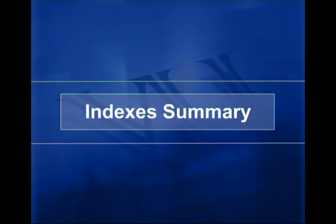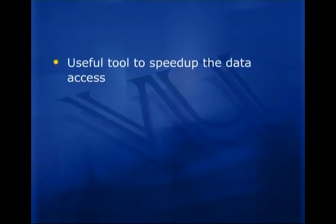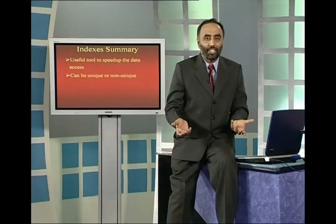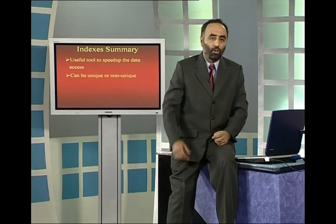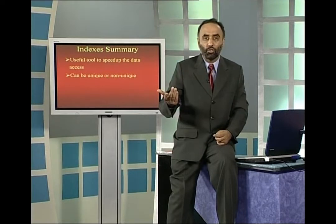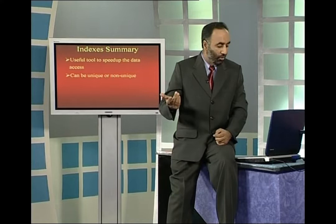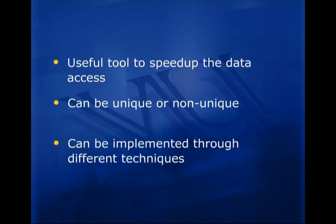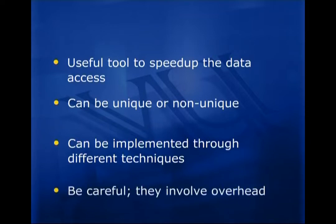To summarize the discussion on indexes: they are a useful tool to speed up data access. They can be unique or non-unique — primary key creates a unique index, while secondary keys are non-unique indexes. They can be implemented through different techniques — the three major techniques we discussed are inverted files, linked lists, and trees. Be careful: they involve overhead.